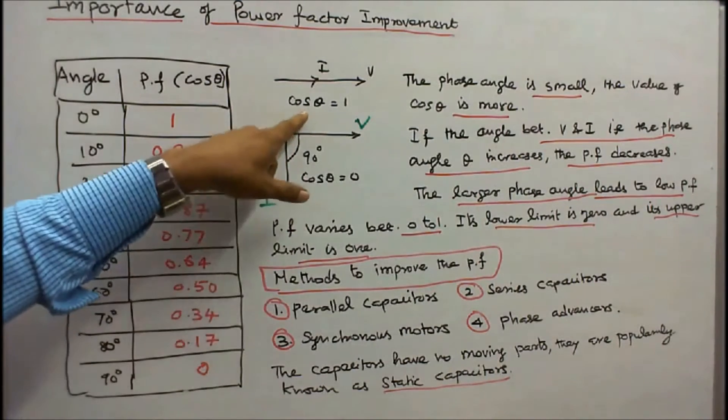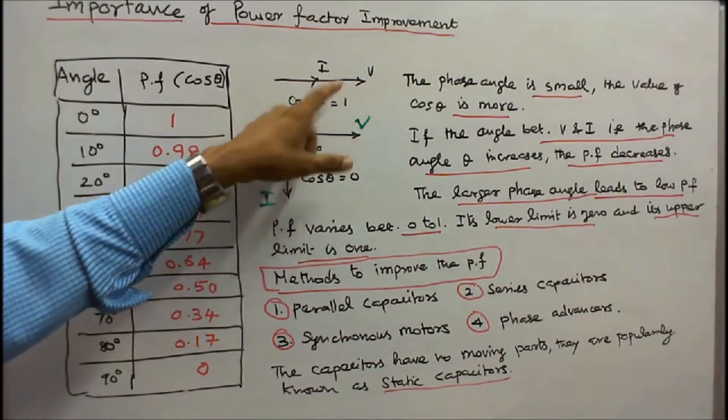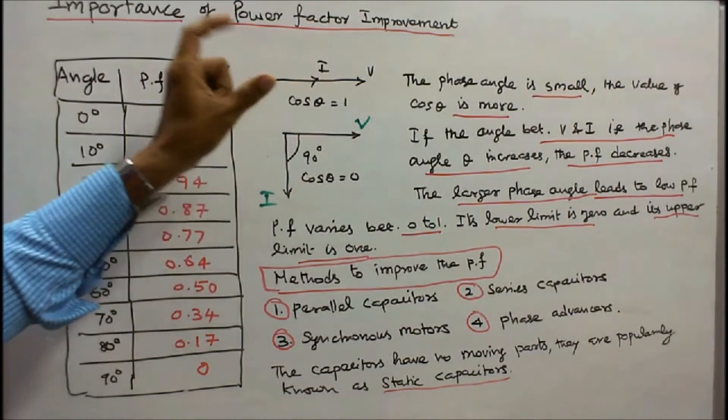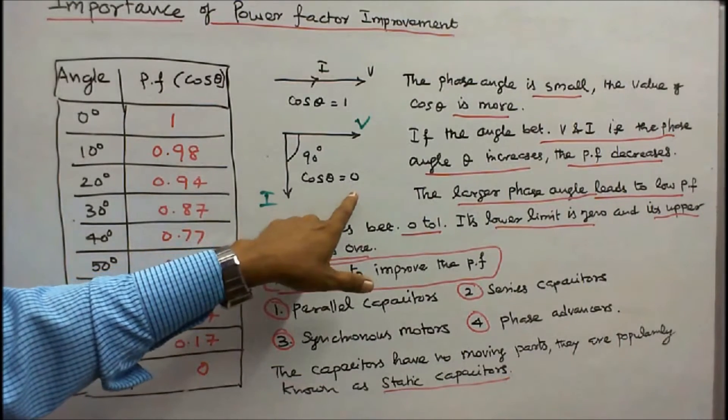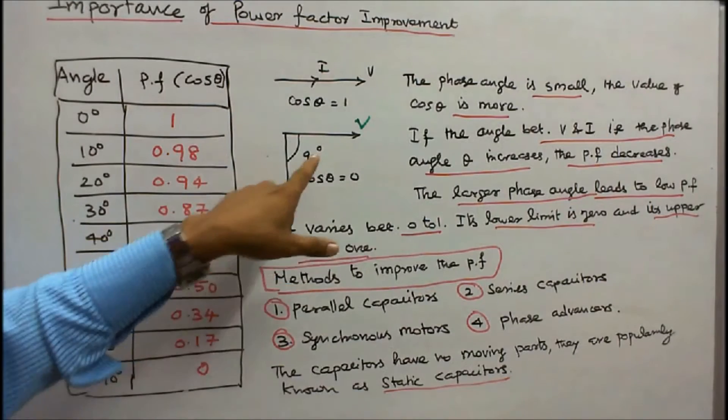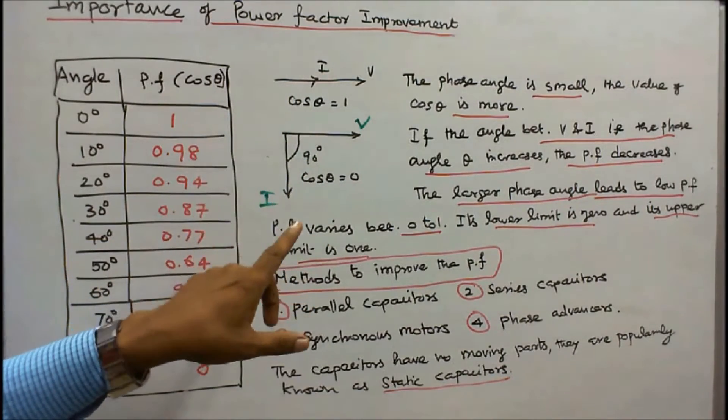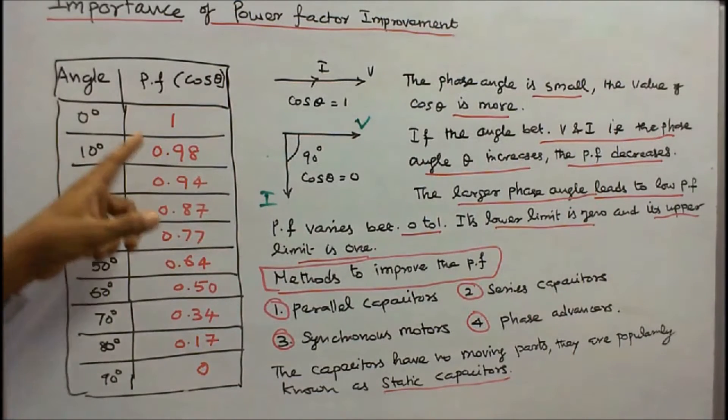Here, cos 0 is equal to 1. That means the voltage and the current are in phase. The phase difference is 0. Here, cos 90 is equal to 0. That is, the voltage and current have a phase difference of 90 degrees.